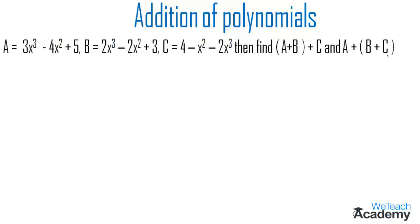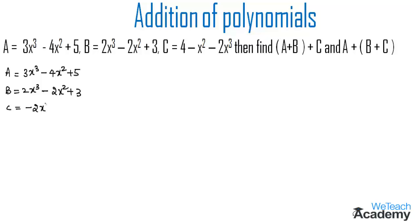First, let us write all three expressions so that the powers of x are in descending order. Expression A is 3x³ - 4x² + 5, expression B is 2x³ - 2x² + 3, and expression C is -2x³ - x² + 4.